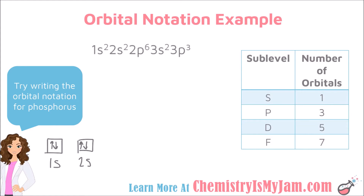The next sublevel I see is a p. A p sublevel should have three orbitals, so I'm going to draw three boxes, labeled 2p, and fill it up. It should have six electrons — that's going to totally fill up my p sublevel. Even though I'm going to fill it up, I still draw all of my up arrows first, because that's a good habit so that I don't violate Hund's Rule. Then I draw my down arrows — six arrows total. I'm now ready to go to the 3s.